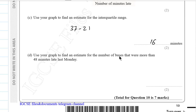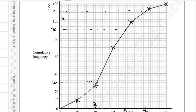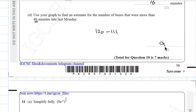Use the graph to estimate the number of buses more than 48 minutes late. Reading across from 48 on the horizontal axis gives a cumulative frequency of approximately 111. The number of buses more than 48 minutes late is 120 − 111 = 9 buses.